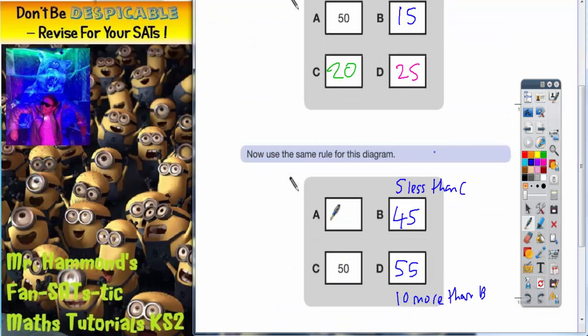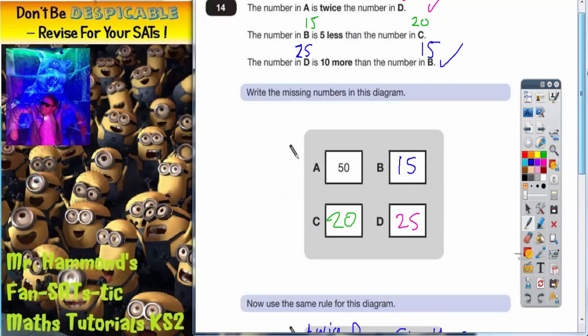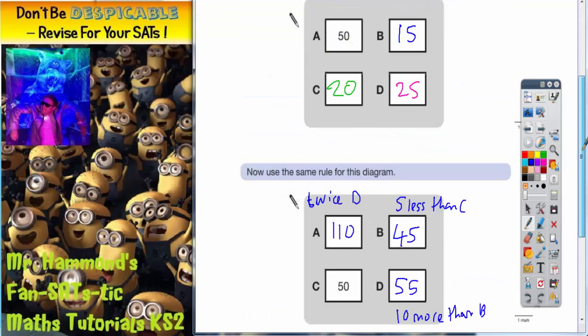So A is twice D. Well, if D is 55, two of those, twice D, twice 55, or 55 twice if you like, two lots of 55, two lots of 55 is 110. So A would have to be 110. But you've constantly got to refer back to the clues to make sure everything fits.